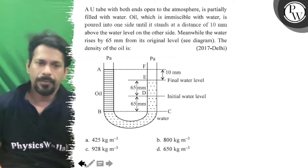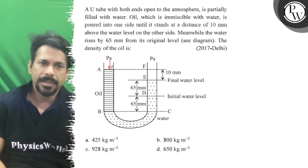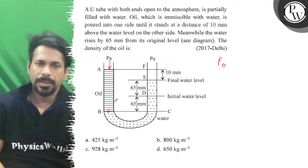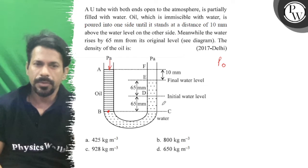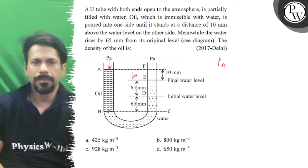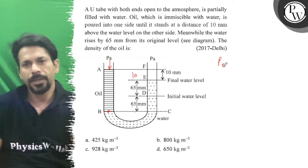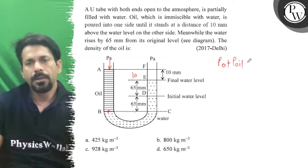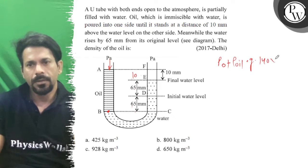We will use the manometric equation here. Starting from p0, we are going down. The total length on the oil side is: 65 + 65 + 10 = 130 + 10 = 140. So p0 plus rho of oil into g into 140 × 10 to the power minus 2.